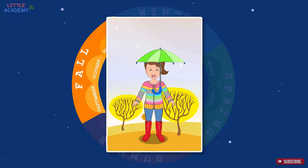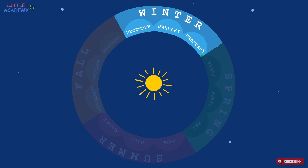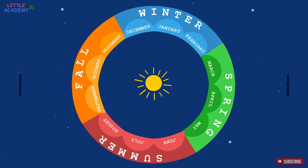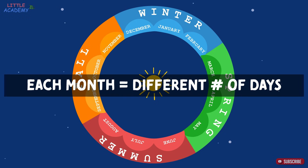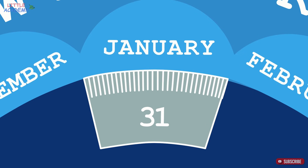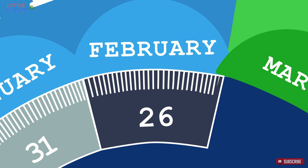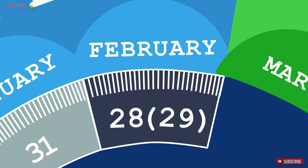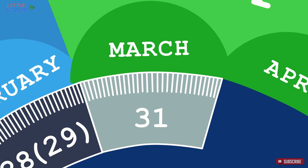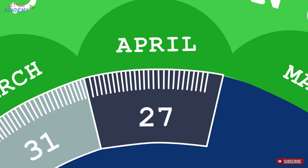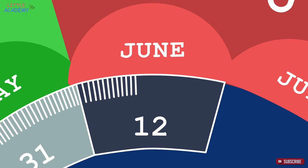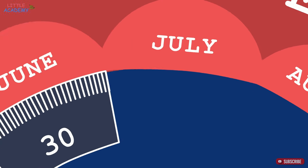Then comes winter and everything starts all over. Now let's go back to months. Each month has a different number of days. For instance, January has 31 days, February has 28 days, but sometimes it has 29 days — those years are called leap years. March has 31 days, April has 30 days, May has 31 days, June has 30 days, July has 31 days.